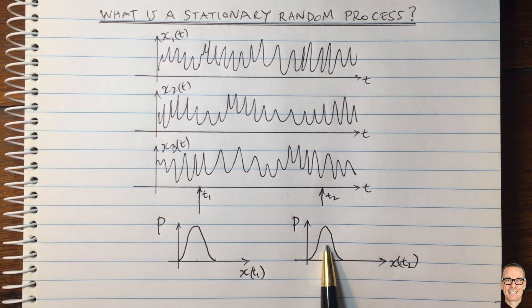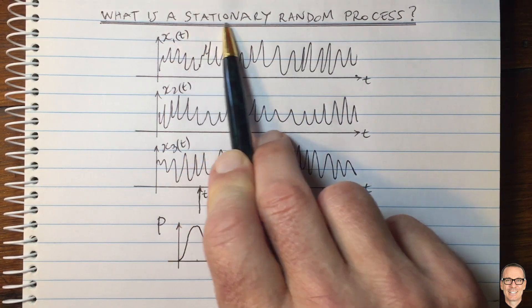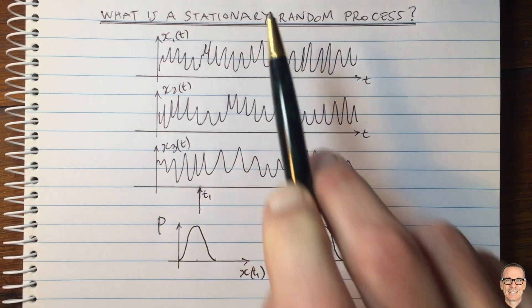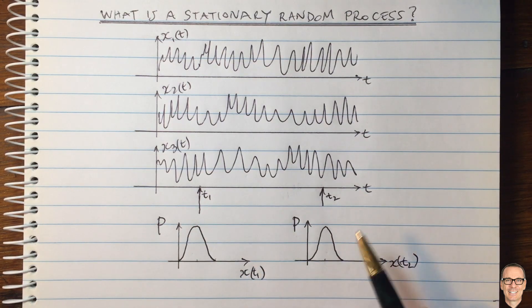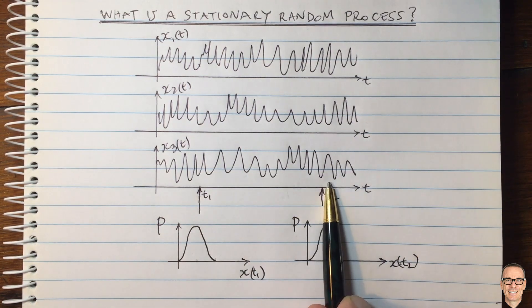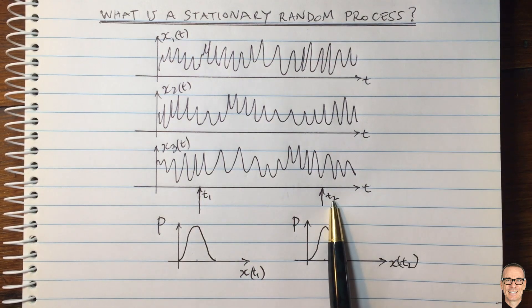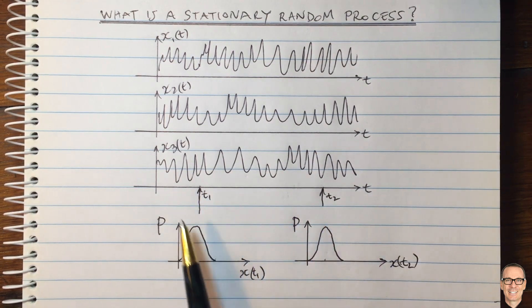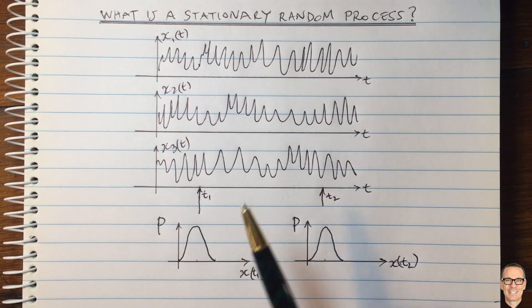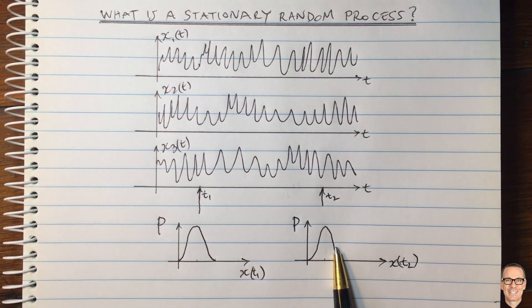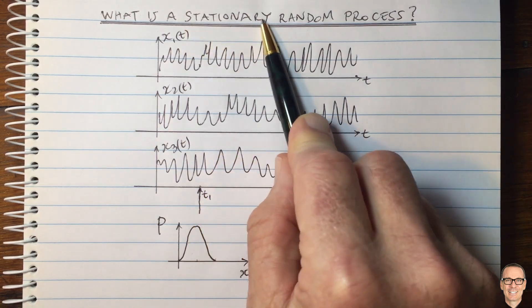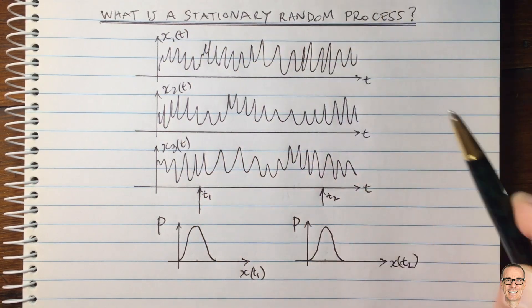Now, if these probability density functions are the same, then the process is stationary. That's the definition. If this exact probability density function is the same for all time, irrespective of whether you pick it as t1 or t2 or any other time, if for every single time, the random variable at that time has the same density function, then the process is a stationary random process.